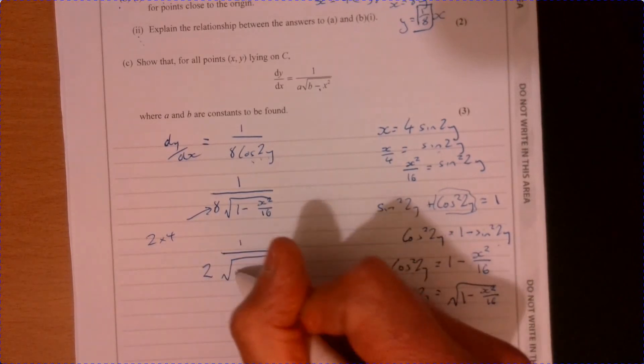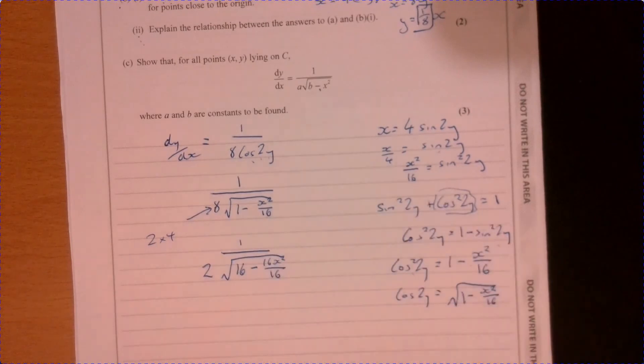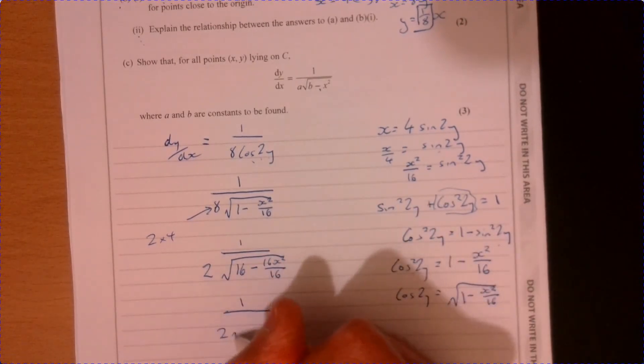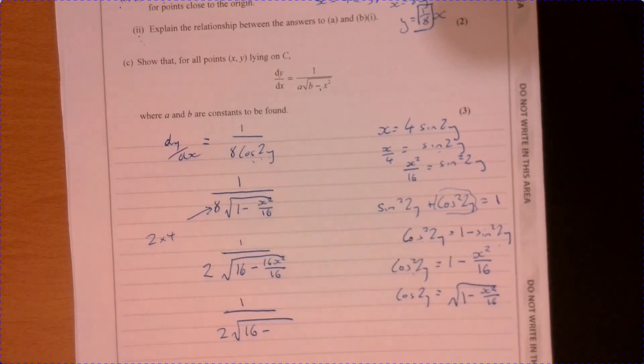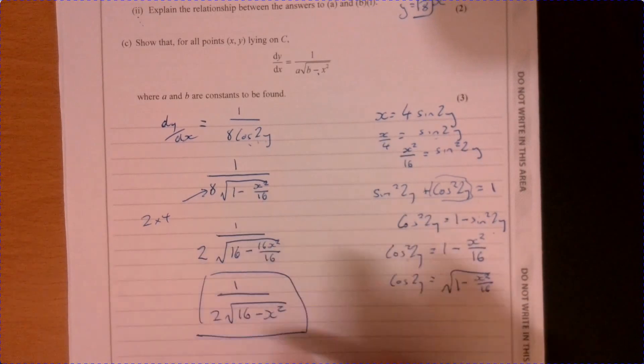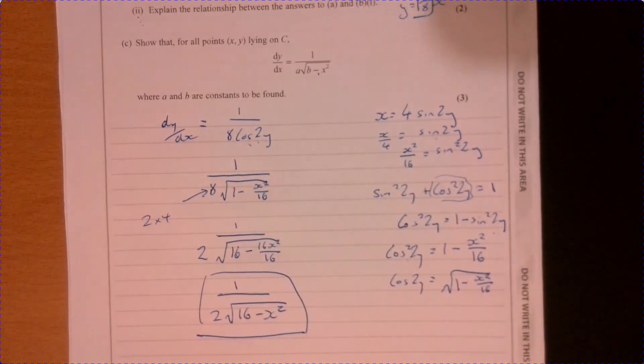So 16 squared over 16. And let's see where we get to. 2 root 16 take away x squared. And that's the format that we wanted. There we go. All done.